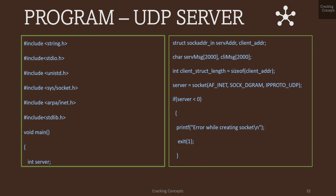Next we'll see the UDP server and client implementation, beginning with the UDP server. I've included all the header files. I declare two sockaddr_in structure variables and two message variables, and store the client address size. I create a UDP socket using AF_INET, SOCK_DGRAM, and IPPROTO_UDP — note that for TCP you would use IPPROTO_TCP, and for IP protocol you can also simply specify 0.